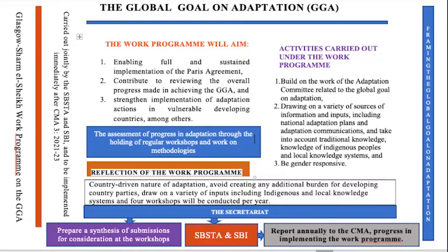These workshops will be conducted by the secretariat, and the secretariat will prepare a synthesis of submissions for consideration at each workshop. The secretariat will also prepare annual reports to the CMA on progress in implementing the work program. This is basically how the Glasgow Work Program on the global goal on adaptation is framed — its aim, activities, reflections, and annual reporting.